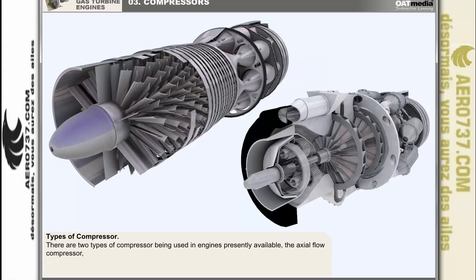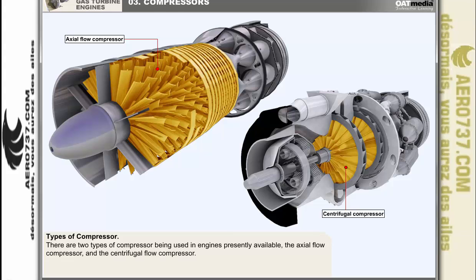There are two types of compressor being used in engines presently available. One allows axial airflow through the engine, while the other creates centrifugal flow through the engine. In each case, the compressors are driven by a turbine which is coupled to the compressor by a shaft.